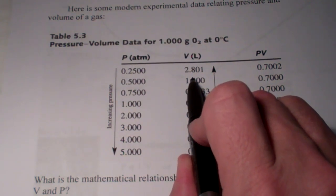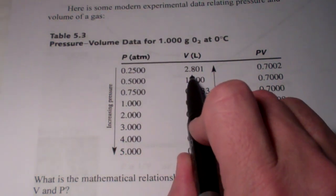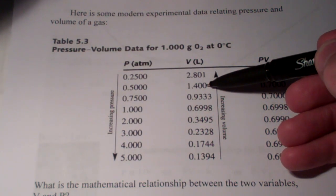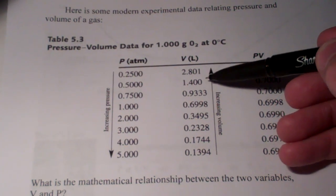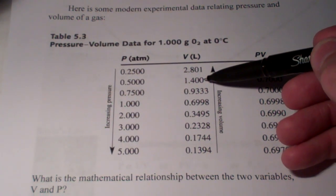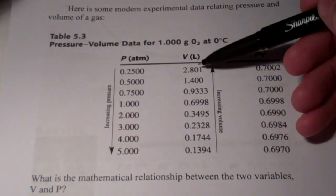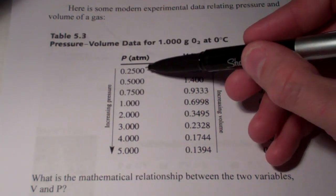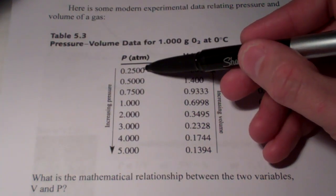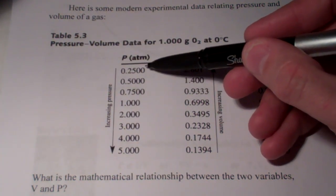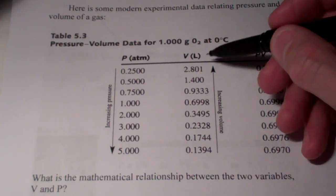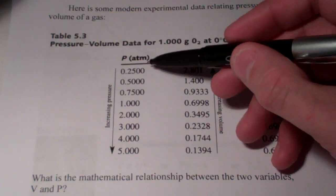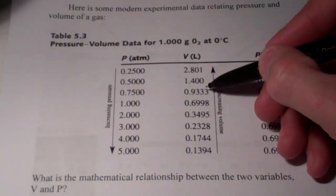In the second situation, I have exactly doubled the pressure. And take a look and see what the volume has done. It's gone from essentially 2.8 to 1.4. I've doubled the pressure and the volume has decreased by one half. Now, between the first and the third, I triple the pressure, 0.2500 to 0.7500 and the volume goes down by a third. So tripling the pressure reduces the volume by a third.